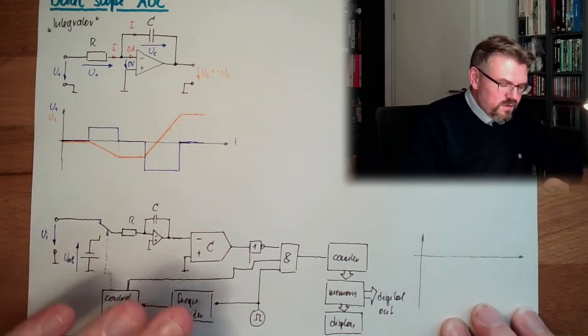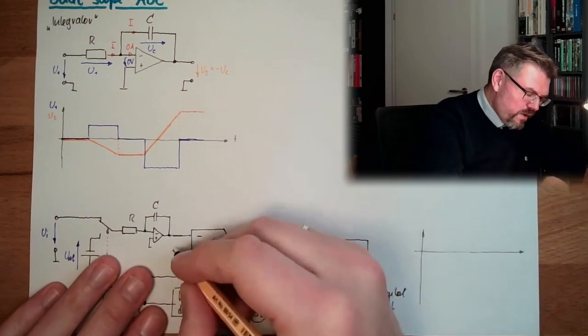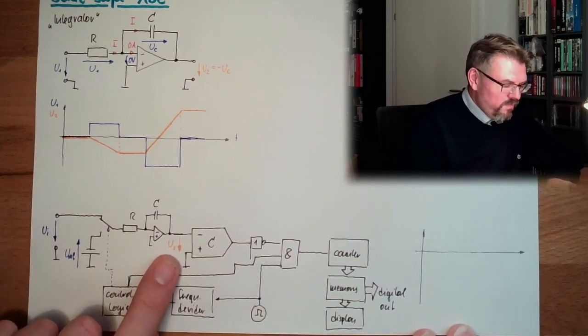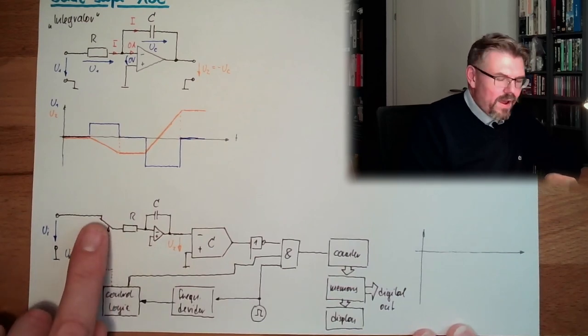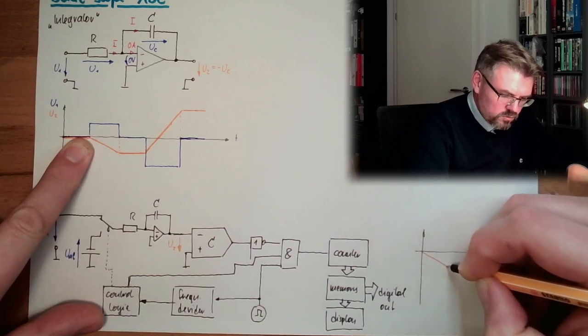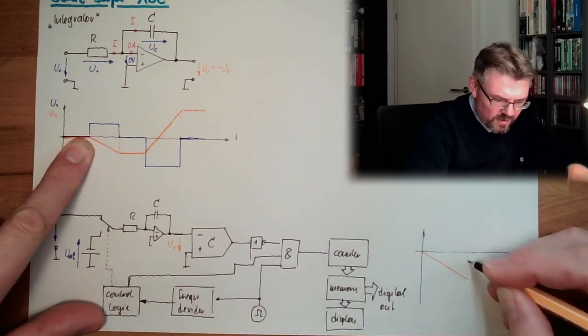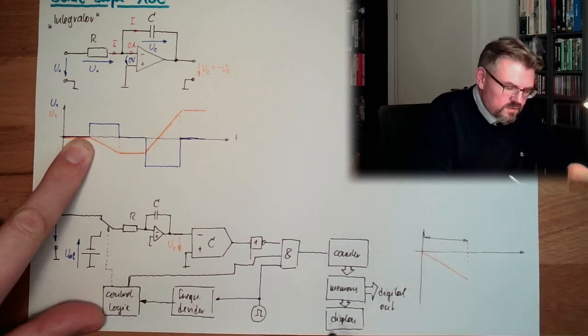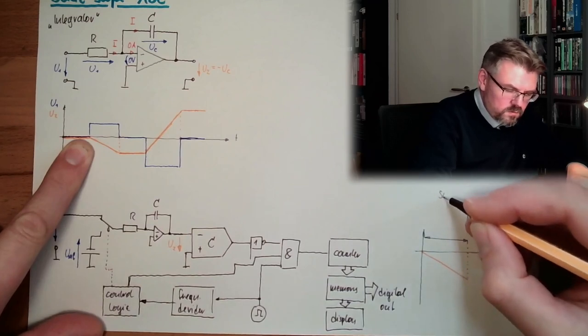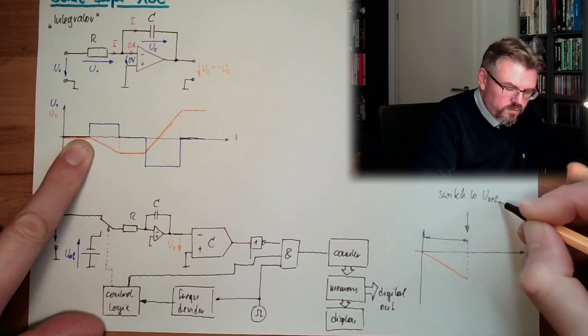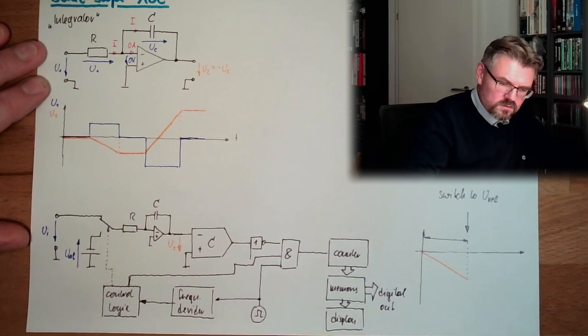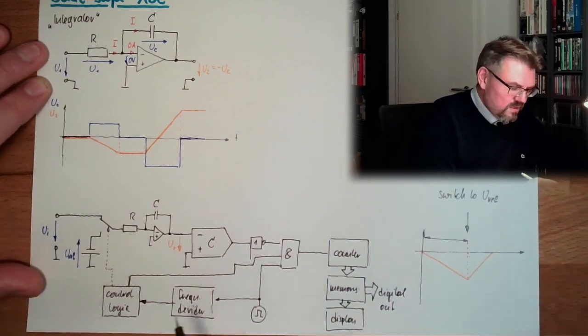The control logic will switch, everything is discharged. So here we have U, I call it again U2. Everything is discharged, and then suddenly the control logic will switch UI to this. So U2 will start to, if we have a UI, U2 will start to drop. So here after a certain amount of time which is somehow adjusted in this control logic, we will switch to the reference voltage. The reference voltage is now of different sign, and we will discharge according to the ramp which is determined by the reference voltage.